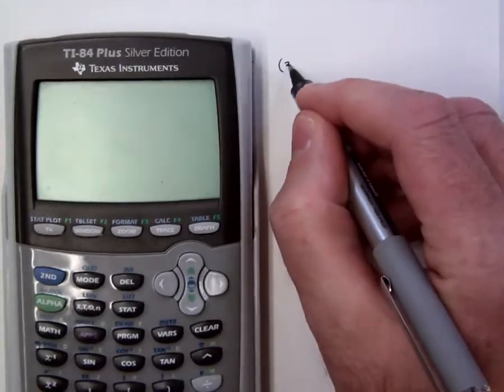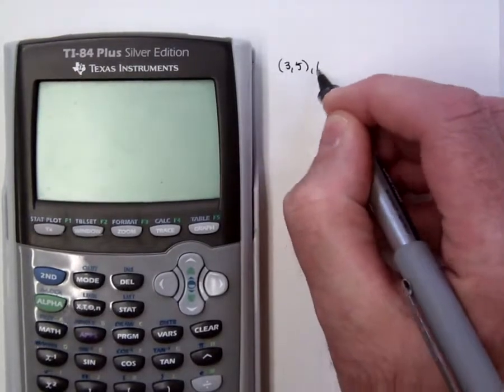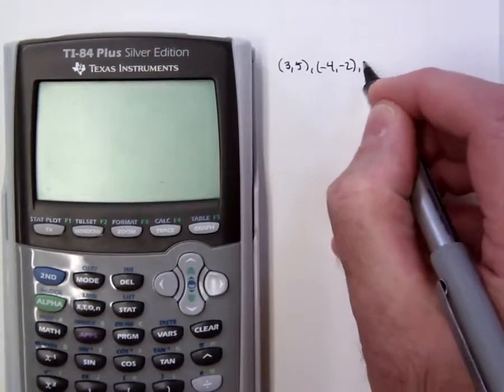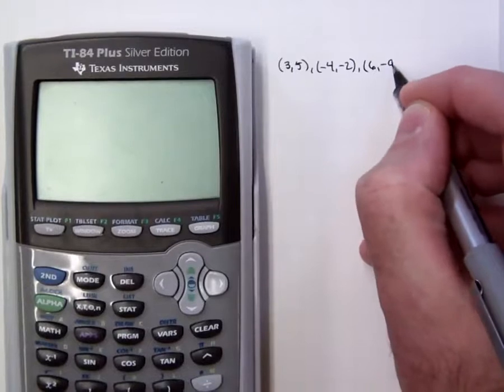And we'll start with the three points: (3, 5), (-4, -2), and (6, -9).